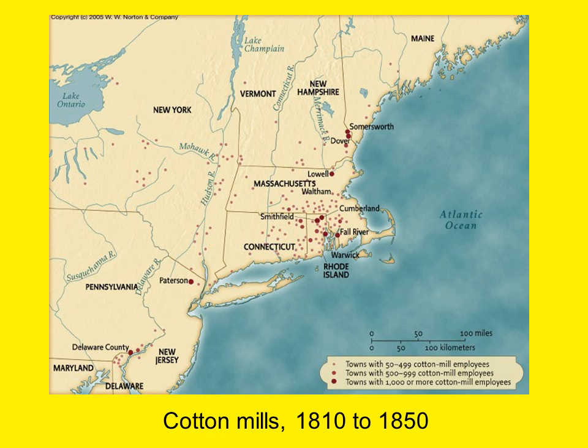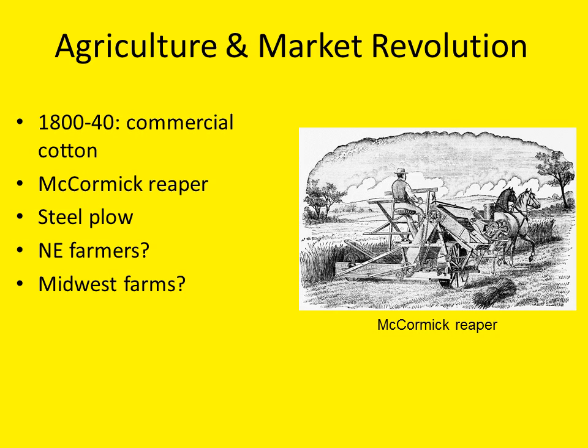This map shows the location and density of cotton mills in New England that appeared by the year 1850. Agriculture was an important component of the market revolution. In the period from 1800 to 1840, commercial cotton expanded across the southern United States due to the cotton gin, and the United States became the world's largest exporter of cotton. The mechanical reaper that Cyrus McCormick patented was at least five times more efficient than hand-harvesting wheat crops. The steel plow, invented by John Deere, helped increase Midwestern corn and grain production to record highs. However, New England farming communities increasingly struggled, as these farms lacked sufficient yields for market settings and were smaller, unlike the larger, increasingly commercial Midwestern farms.